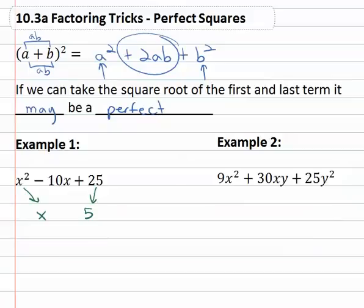To test the middle term, we're going to always multiply by a two—that comes from the formula. So x times five times two, always a two, equals ten x, and notice that matches in the middle. So that tells us we have a perfect square.